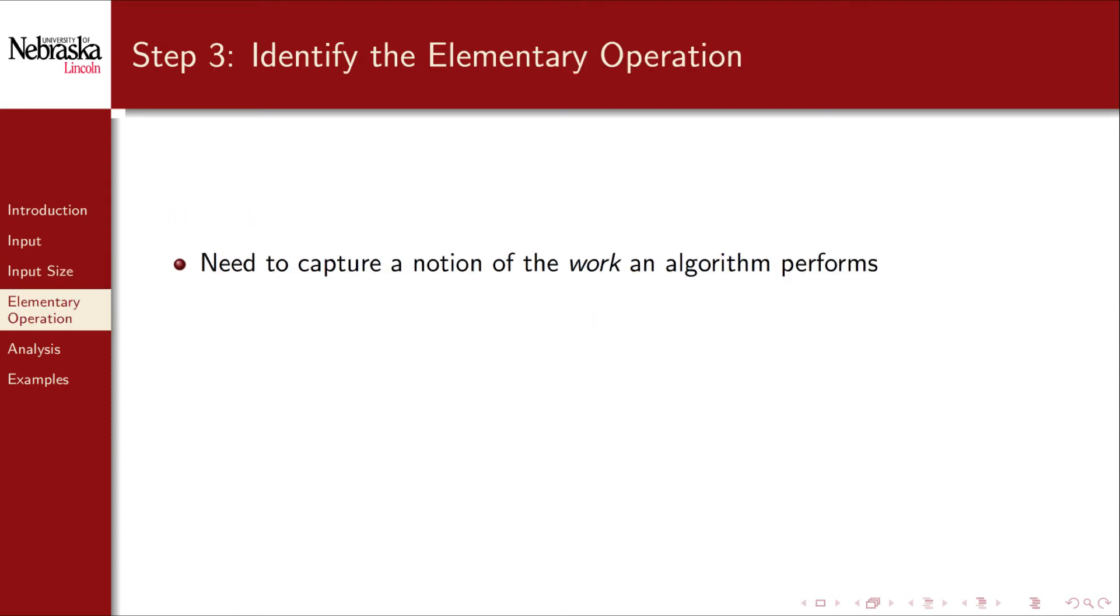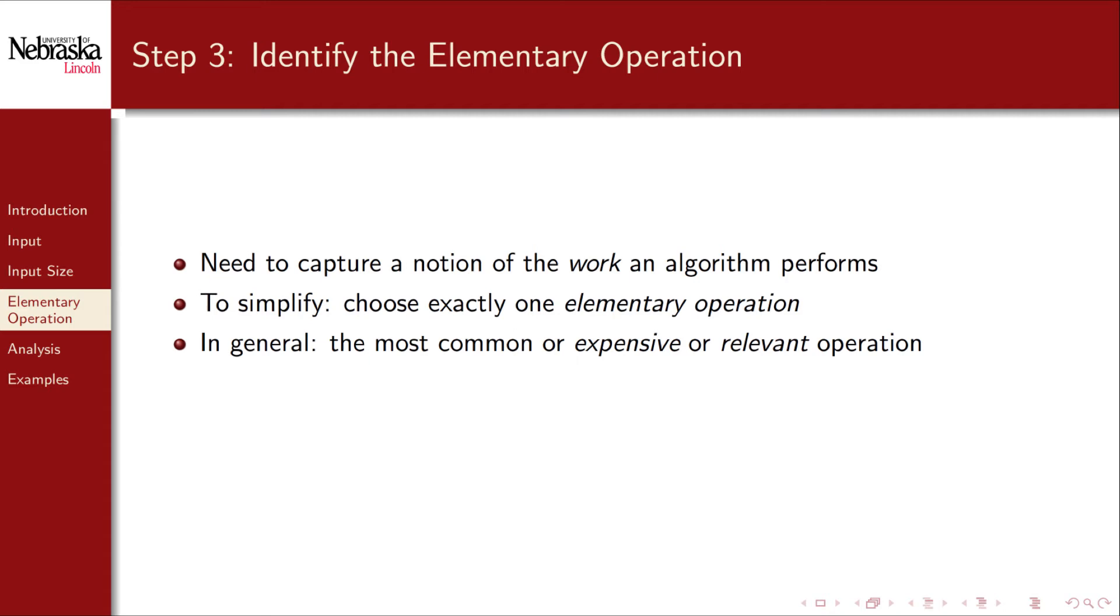In the third step, we want to capture some notion of work that an algorithm performs. Again, to simplify the analysis, we choose a single elementary operation that the algorithm performs. In general, we will choose the most common or expensive or the operation most relevant to a particular analysis. An algorithm may perform many different operations, but we only want to focus on one. Considering alternative elementary operations is possible, and may lead to different but still correct analysis.